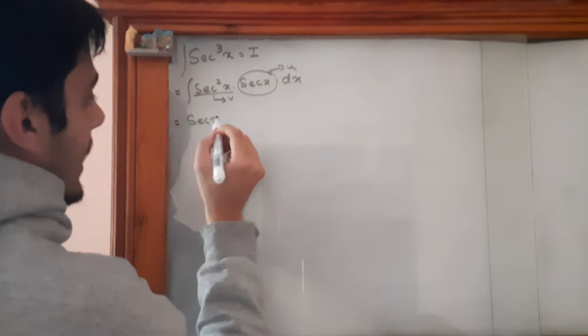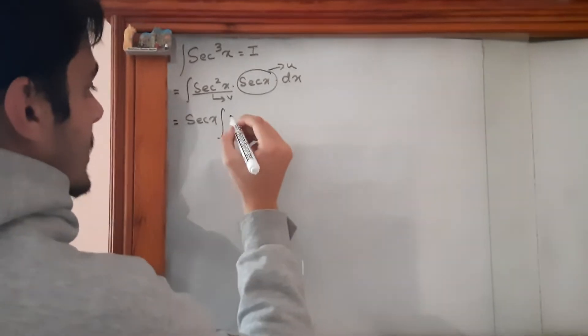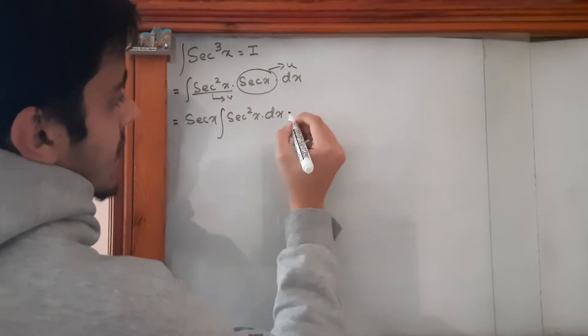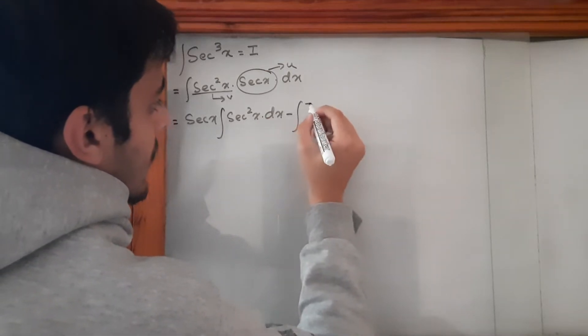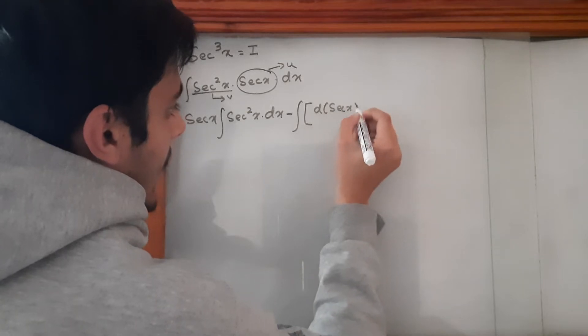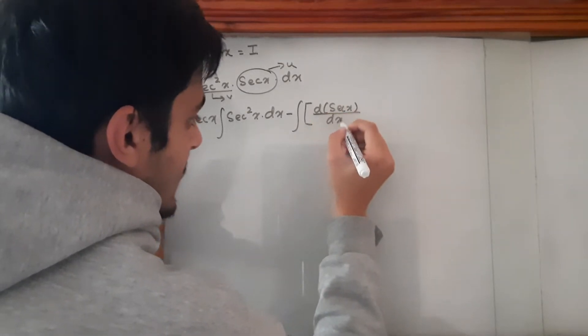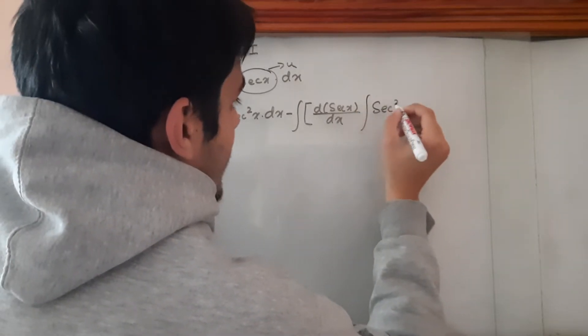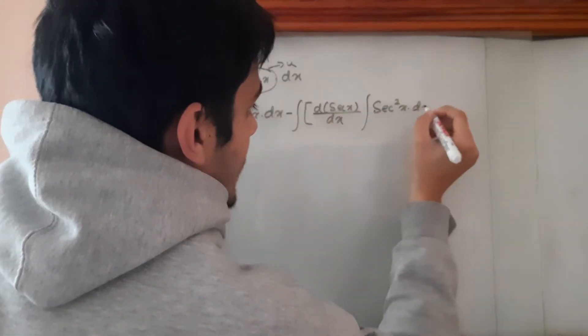So I = secx ∫sec²x dx - ∫(d(secx)/dx · sec²x) dx. This is the integration by parts formula applied to our problem.